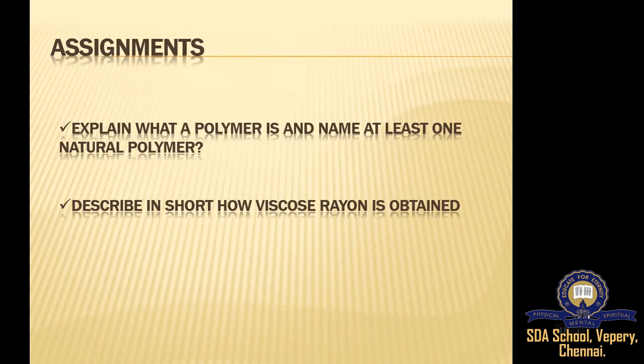For today's assignment: first, explain what a polymer is and name at least one natural polymer. Second, describe in short how Viscose Rayon is obtained.